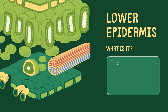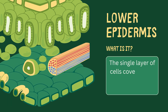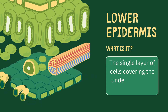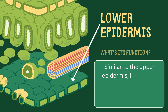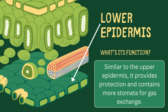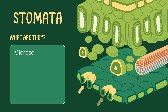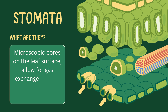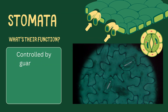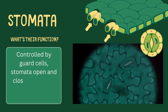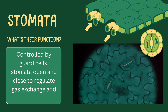Lower epidermis. The single layer of cells covering the underside of the leaf. Similar to the upper epidermis, it provides protection and contains more stomata for gas exchange. Stomata are microscopic pores on the leaf surface that allow for gas exchange, carbon dioxide intake, and oxygen release. Controlled by guard cells, stomata open and close to regulate gas exchange and water loss.